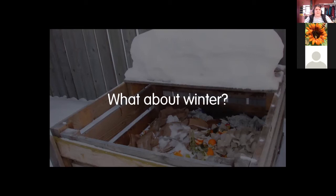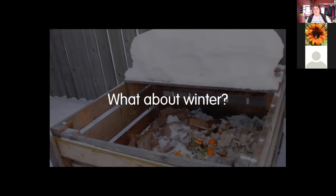If your compost bin gets completely full in winter, use a storage tub or garbage can with a lid to collect food waste from then on. When things thaw in spring, there's room to add it all back on top. Some people switch to the secondary container right away in winter without waiting for the bin to be full, placing it just half a step outside the back door to avoid the cold walk to the bin.